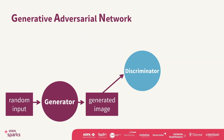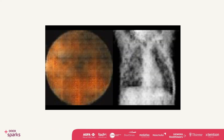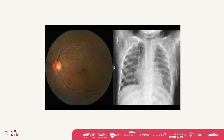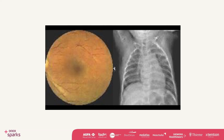The generator gets a random string of numbers as input and learns how to create images. The discriminator gets the generated images as well as real images as input. During training, it learns how to differentiate between the real image and the generated image. We can see the process of GAN here: during training, the discriminator and the generator get better at their job, until it's impossible for the discriminator to differentiate between the two image types.